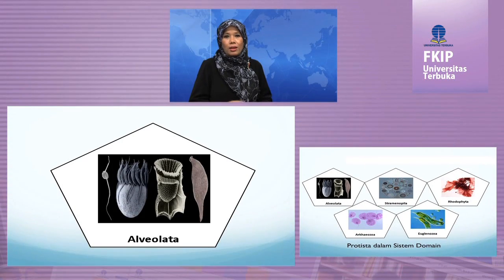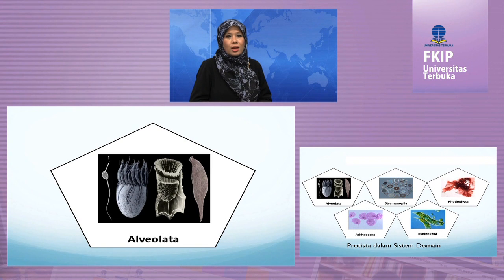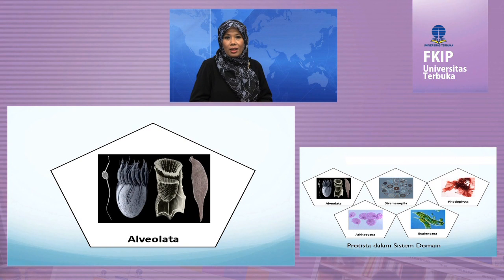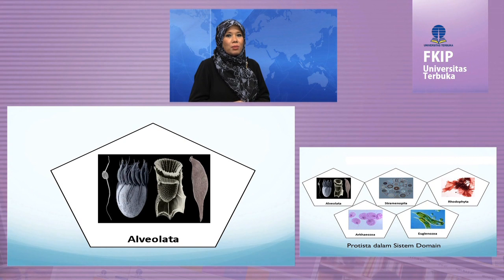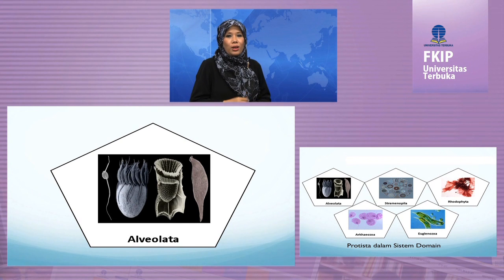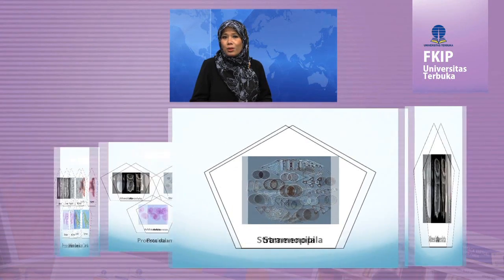Alveolata merupakan kelompok flagelata dan siliata yang bersifat uniseluler, parasit, dan memiliki alveoli. Adanya rongga atau alveoli ini merupakan ciri khas alveolata. Alveolata menyatukan beberapa protista yang bersifat fotosintetik, apikomplexa, siliata, rhizopoda, aktinopoda, foraminifera, dan jamur lendir.